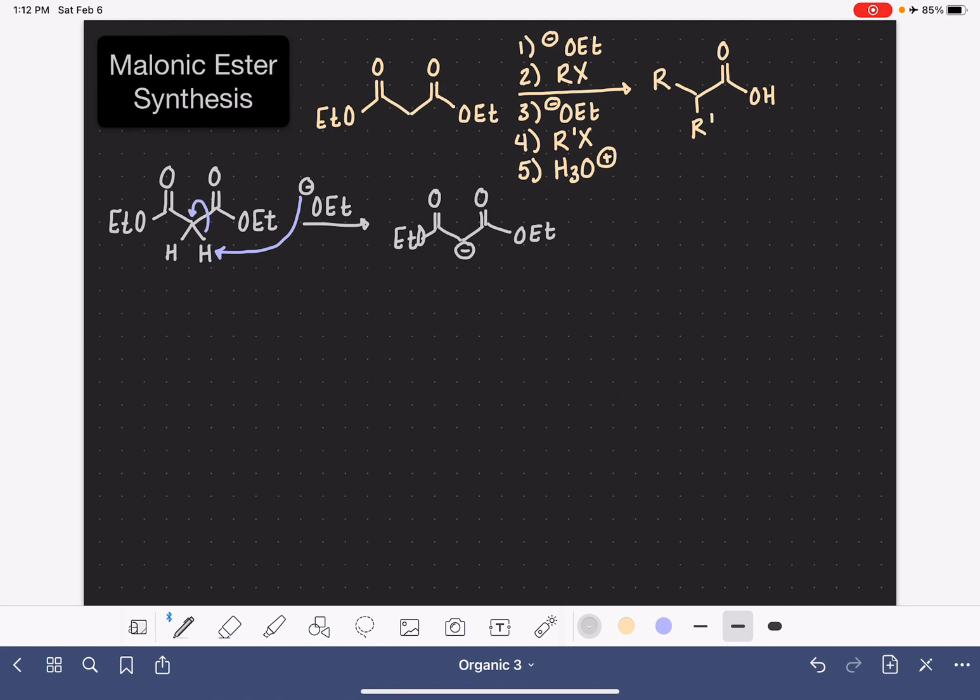This is then going to attack our first alkyl halide. So whatever group we would like to put on this, let's say we wanted to do just a methyl group, so we would use CH3Br. This is an SN2 reaction. This is going to go after the carbon and break the carbon-bromine bond. We have now successfully added our first alkyl group.